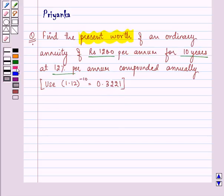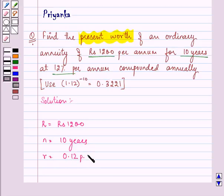So let us start with our solution. Here we are given R, that is the annual installment, as rupees 1200. We are given n, that is time, as 10 years, and we are given the rate of interest as 0.12 per annum.